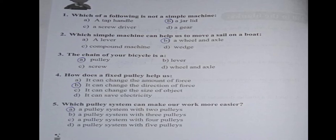Number 2, which simple machine can help us to move a sail on a boat. The answer is B, a wheel and axle. Number 3 is the chain of your bicycle is a, the answer is a pulley.